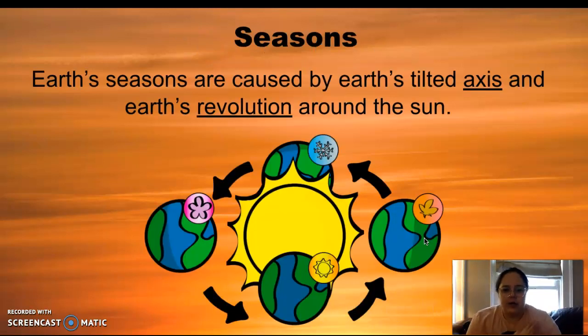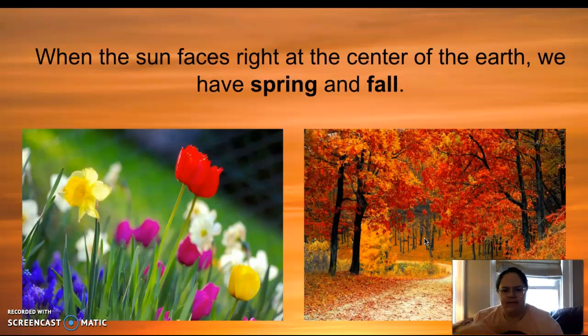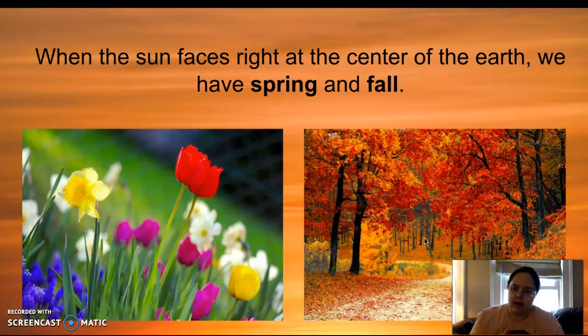Seasons. So we were talking about that tilt. When the Earth is tilted towards the sun on one part of the Earth, it's going to be experiencing summer. When the Earth is tilted away from the sun, it's experiencing winter. When the sun faces right at the center, it's kind of those middle seasons. So that would be spring and fall. Facing towards the sun, it's nice and sunny, it's summertime. Facing away from the sun, we're not getting as much heat. It is wintertime.